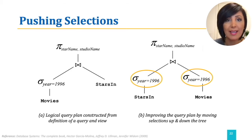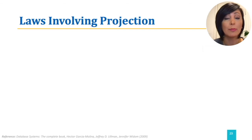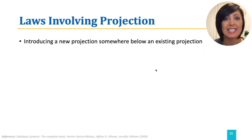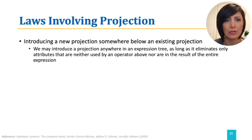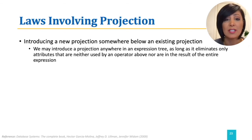Our final query plan will be the improved plan depicted in figure B. Another set of helpful laws are laws involving projections. Introducing projections improves the query plan as they reduce the number of attributes involved. Projection laws are not push laws, but they introduce projections when appropriate. We may introduce a projection anywhere in an expression tree as long as it eliminates only attributes that are neither used by an operator above nor are in the result of the entire expression.